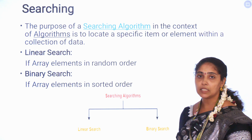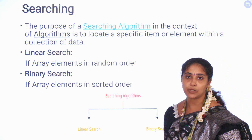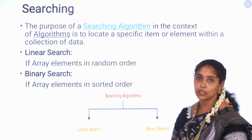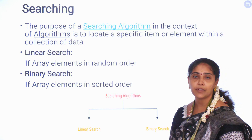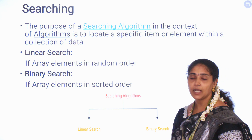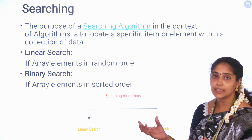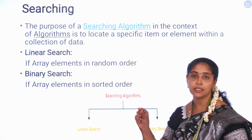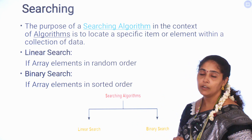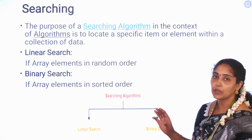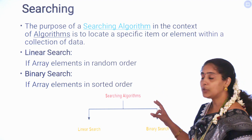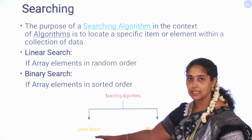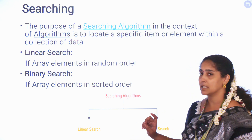Searching is our topic for today. The main thing is the searching algorithm. We have a raw number of data items, and from that data we are going to find one particular thing — that is called searching. For this kind of searching, we use searching algorithms. There are two types: one is linear search, and another one is binary search.